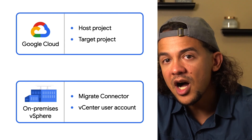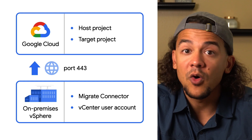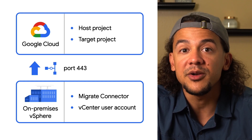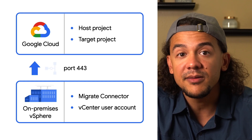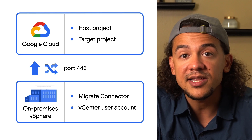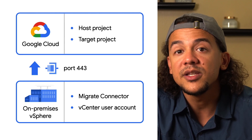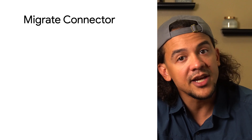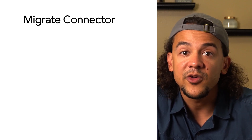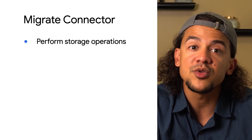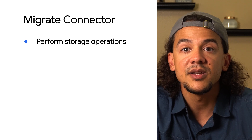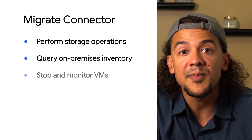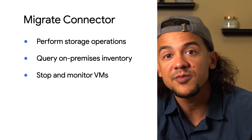This is accomplished using Google Cloud APIs over port 443, and the traffic can be routed via the internet, VPN, private Google access, or dedicated interconnect. Once Migrate Connector is set up in your environment, it will be able to perform storage operations against your VM disks, create your on-prem VM inventory, and stop and monitor your source VMs. All that is done using the vSphere APIs.